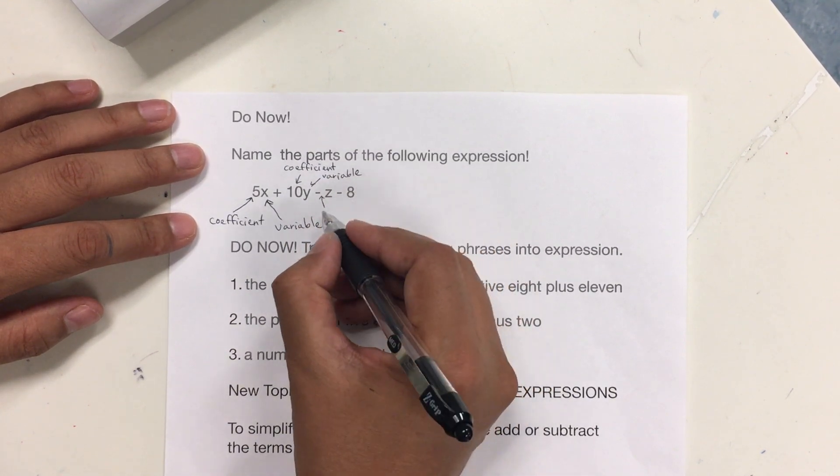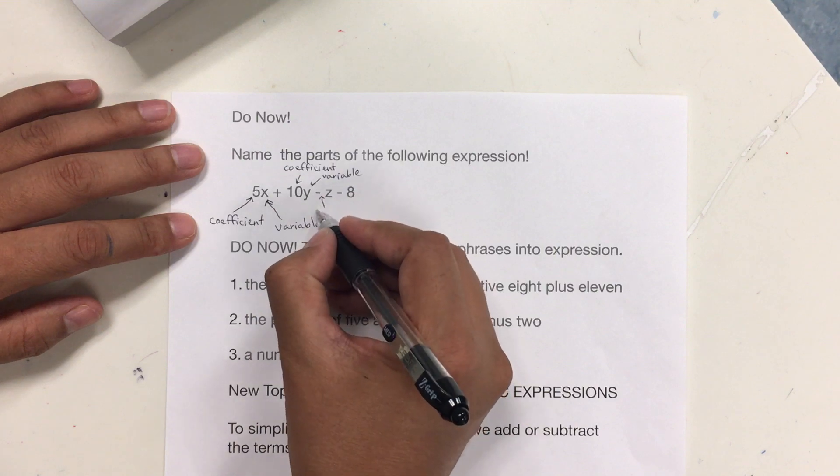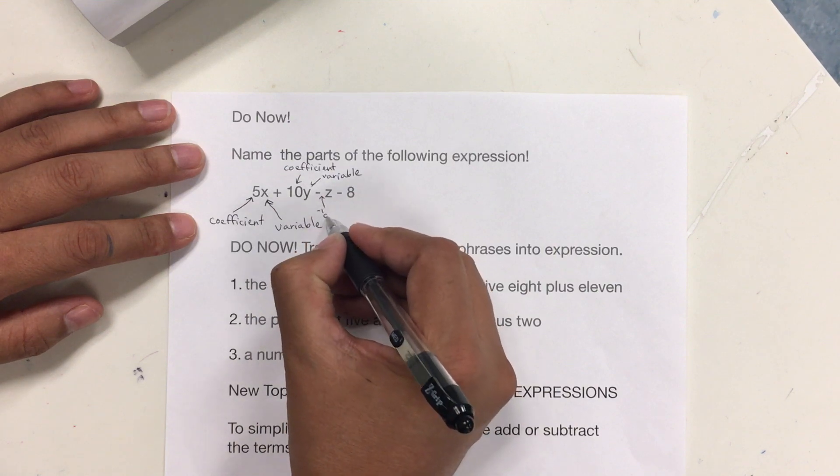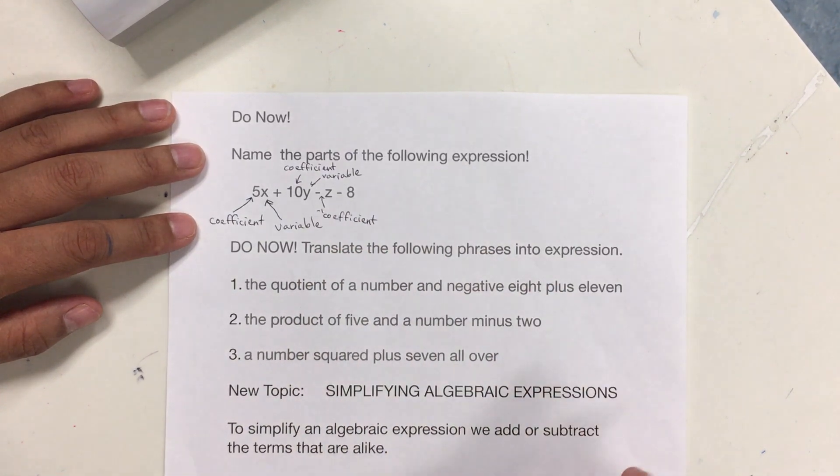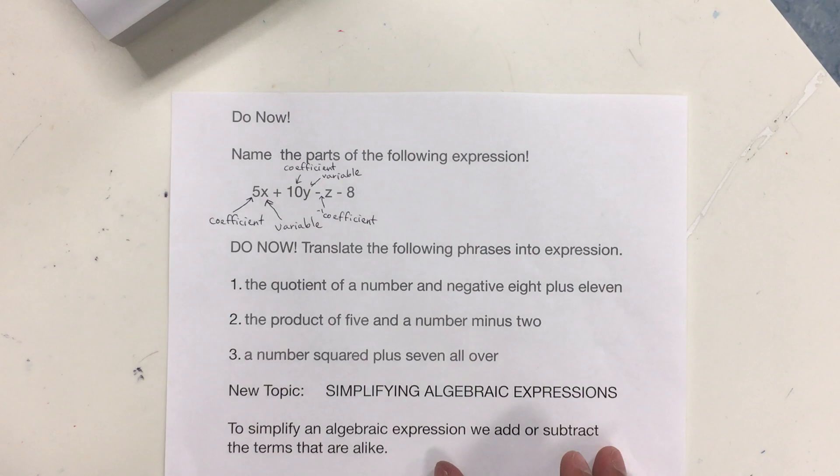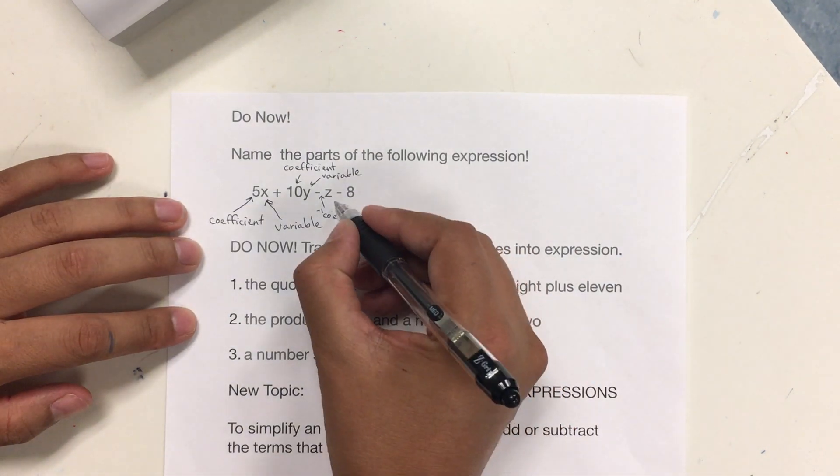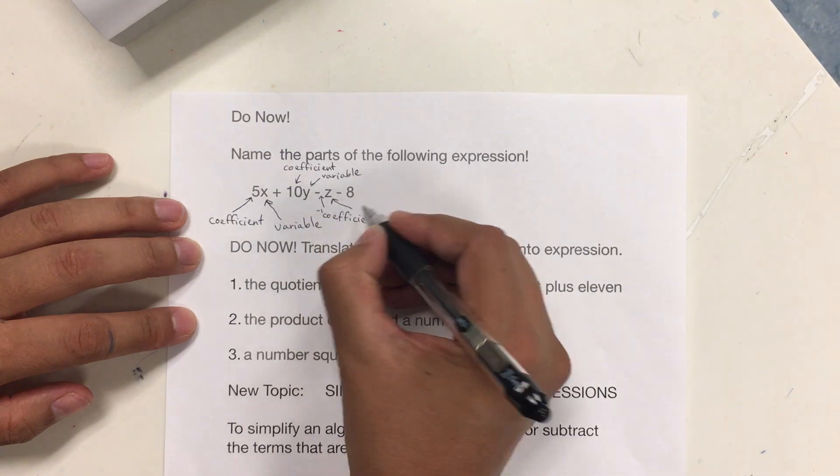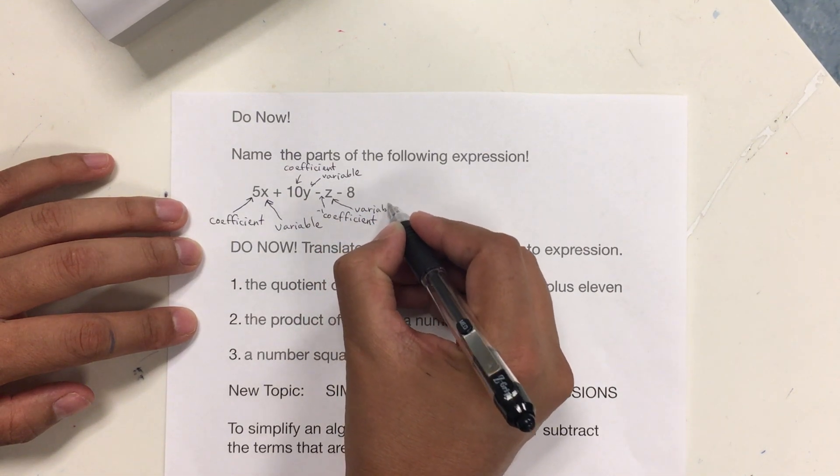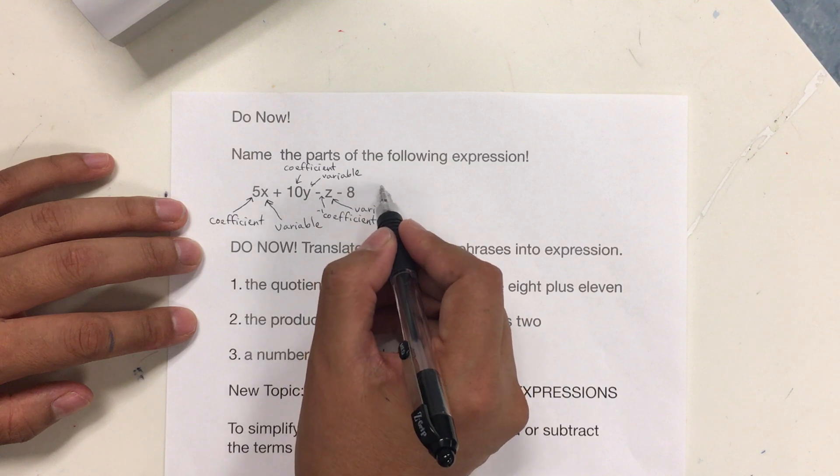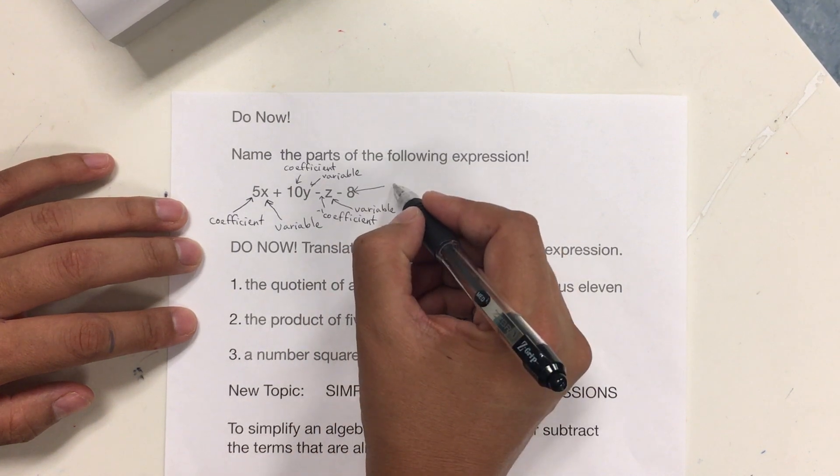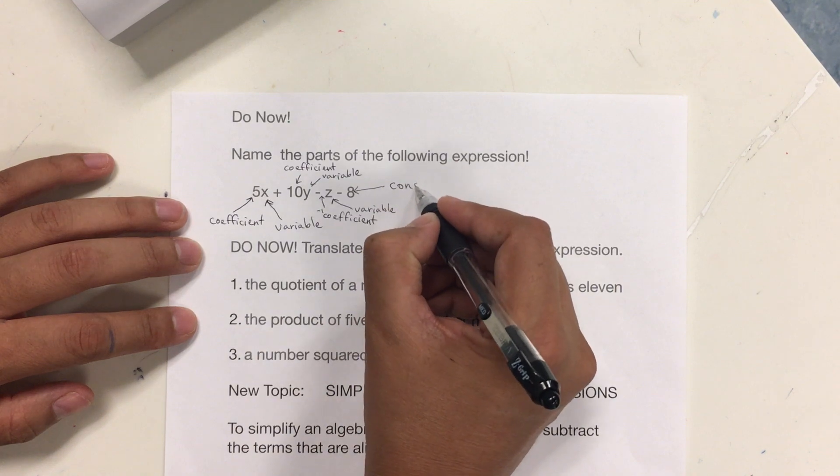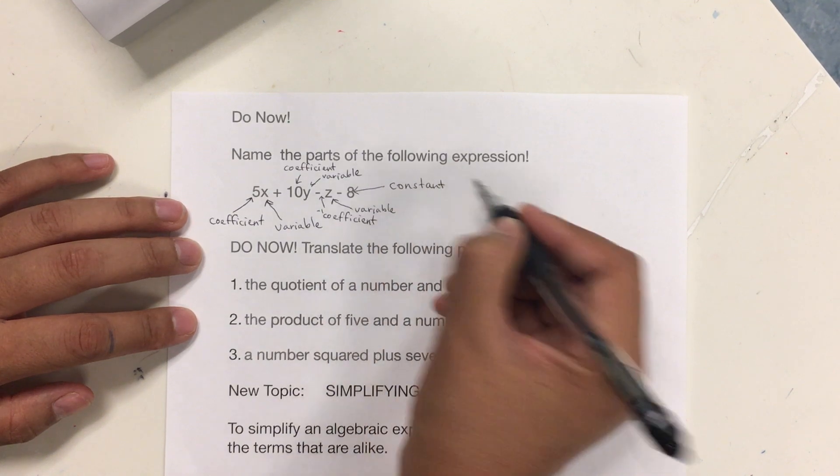Then we have negative 1. I'm going to put here negative 1. That's a coefficient. And the z is a variable. And finally, the negative 8, since it doesn't have a variable, that's a constant. Constant number.